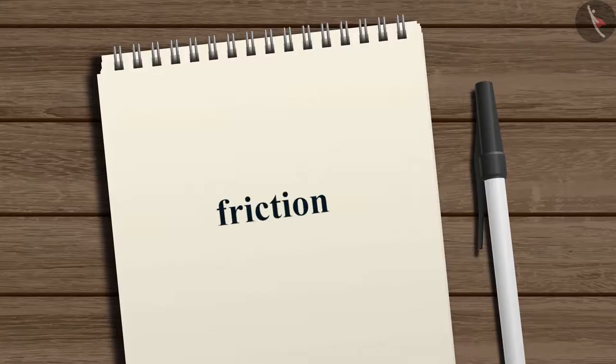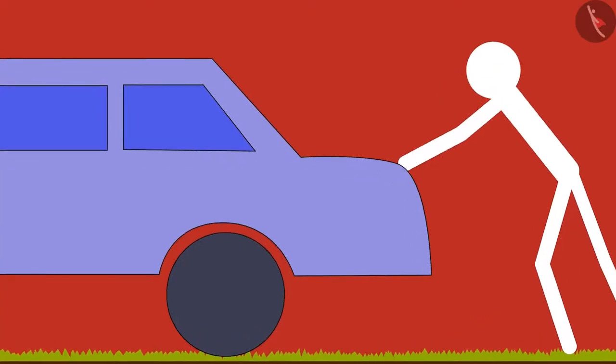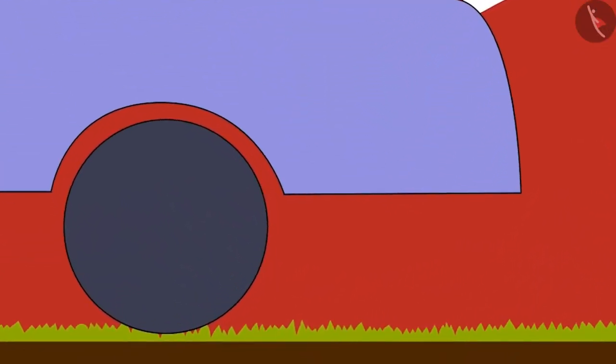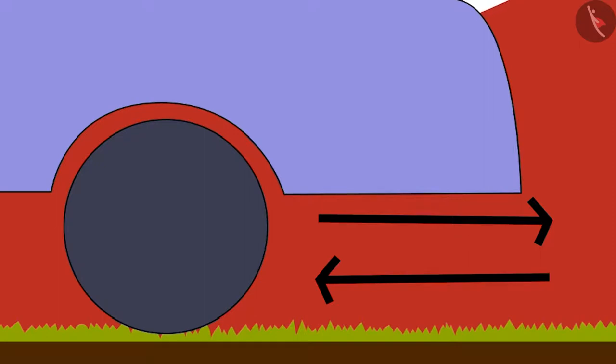This is due to the friction acting in the opposite direction of the push. Friction arises as the wheels of the car are in contact with the rough surface. Here the force of friction balances the pushing force and hence the car does not move.